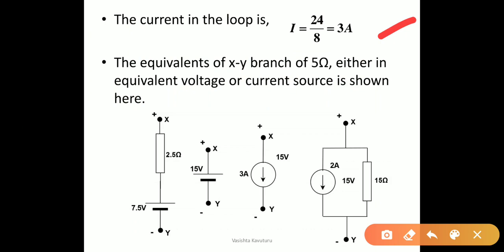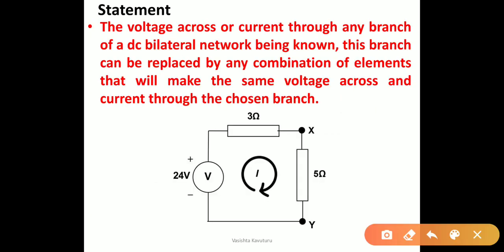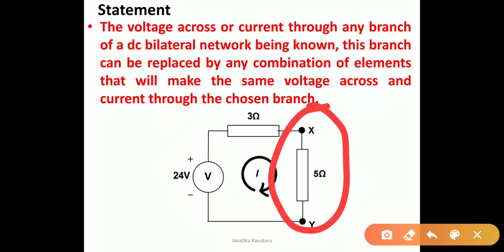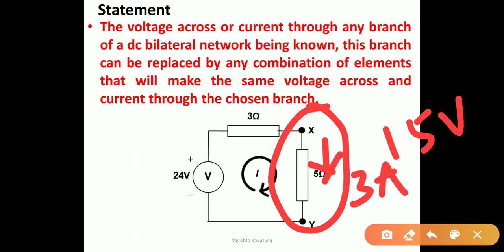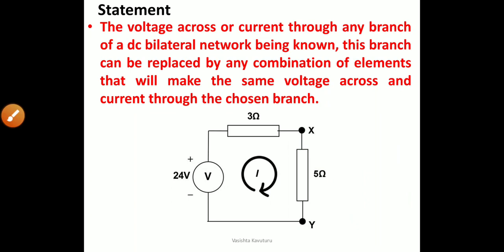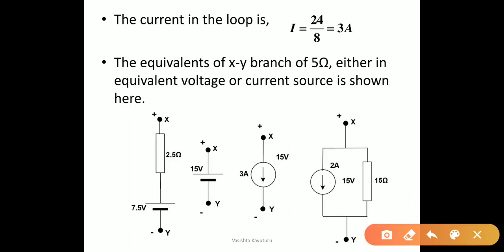So the current in the loop is calculated as 3 amperes. Now the equivalence of the XY branch of the 5-ohm resistance — either an equivalent voltage or current source — is shown here. Since we calculated the current in this branch, we can calculate the voltage across the XY terminals, that is 5 times 3, which is 15 volts, or the current in the 5-ohm branch is 3 amperes.